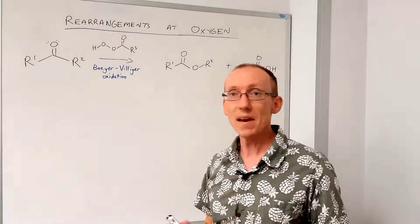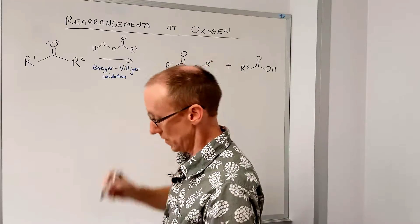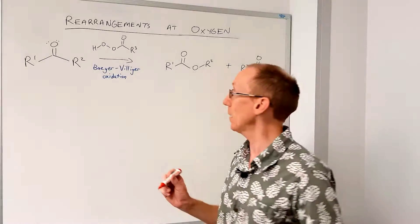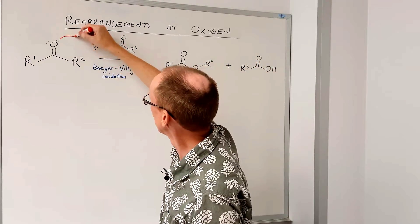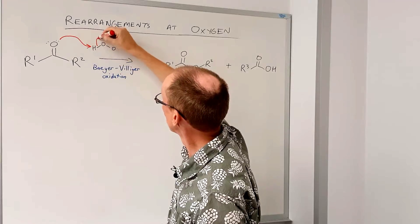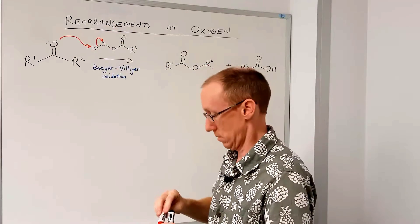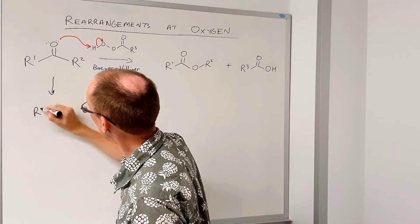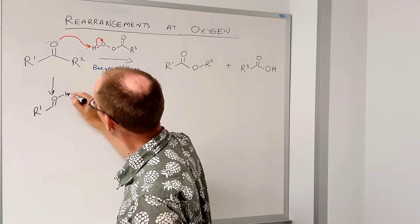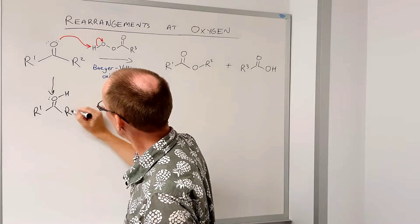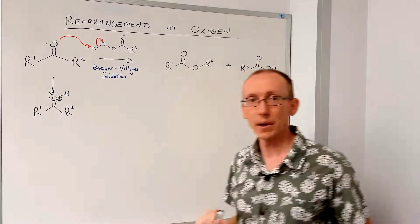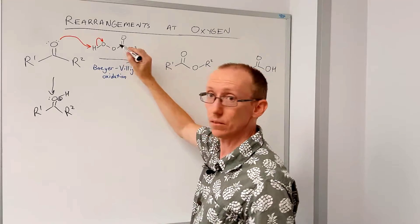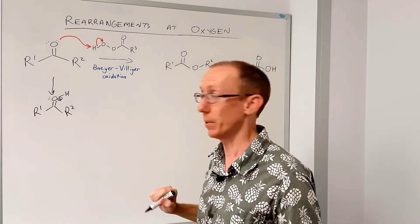The accepted mechanism for this is that firstly, the ketone is made more reactive by being protonated by the carboxylic acid or the peracid. So we end up with a reactive protonated carbonyl group, and the side product of that is going to be the conjugate base.